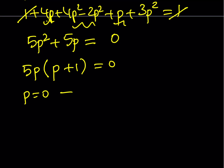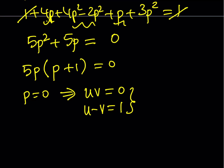So let's go ahead and solve for each one. p equals 0 means uv equals 0, which indicates one of them is 0. We take this along with u minus v equals 1. If u equals 0, then v must be negative 1. If v equals 0, then u must be positive 1. We always knew their difference is 1, so we only need to use u.